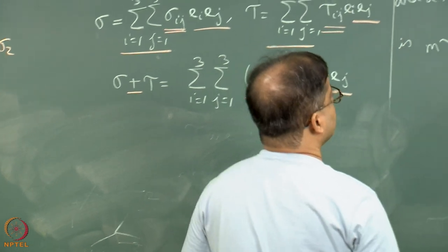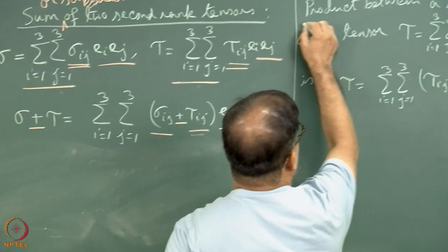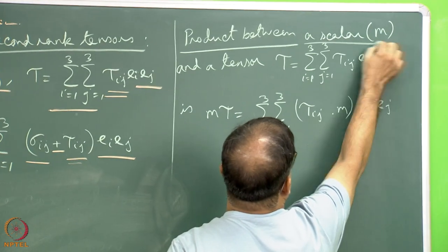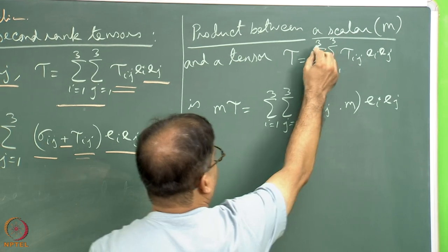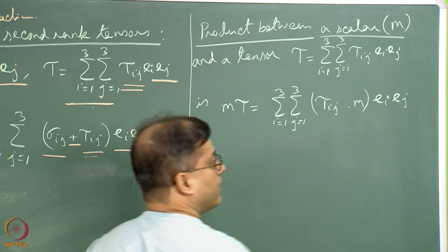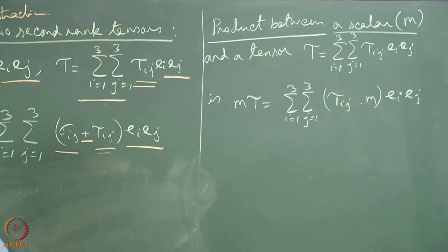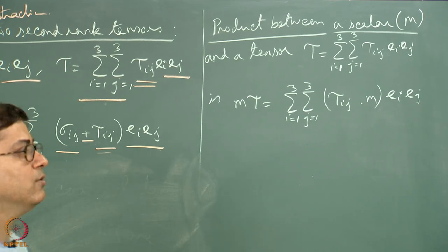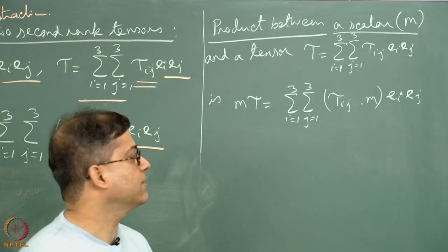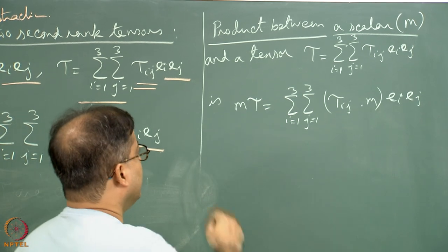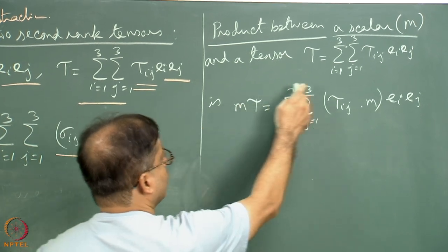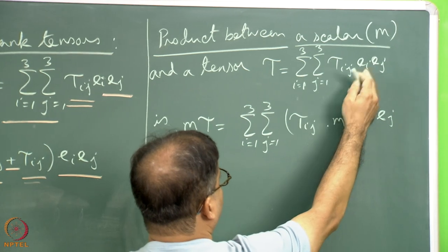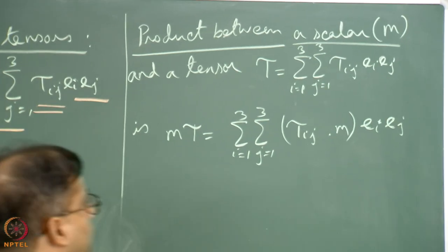The product between a scalar m and a tensor tau. The scalar m is a number — for example 5, 7, 2.2, etc. — where the basis vectors e_i, e_j, e_k are not required. The tensor tau is given by the double summation over i and j from 1 to 3 of tau_ij times e_i e_j.